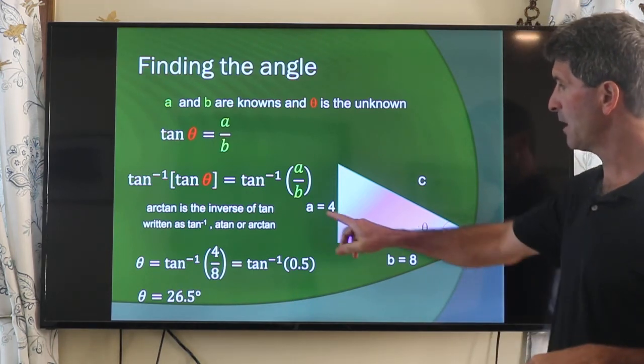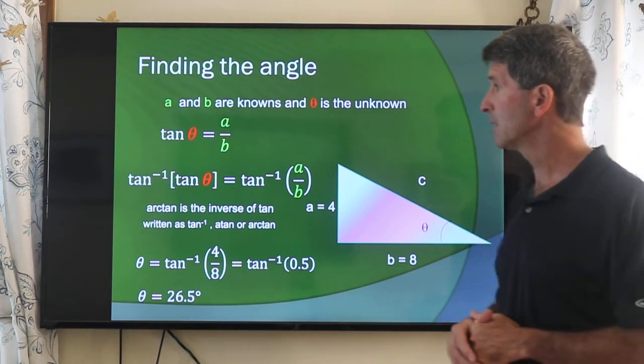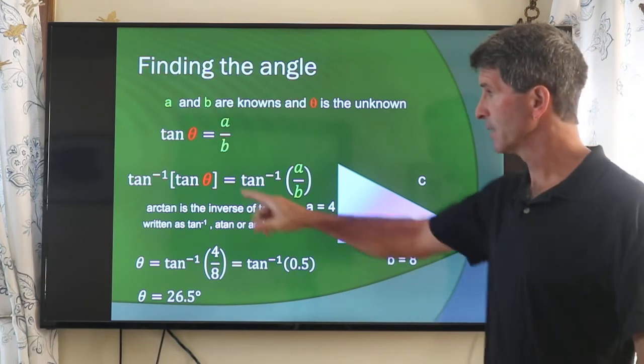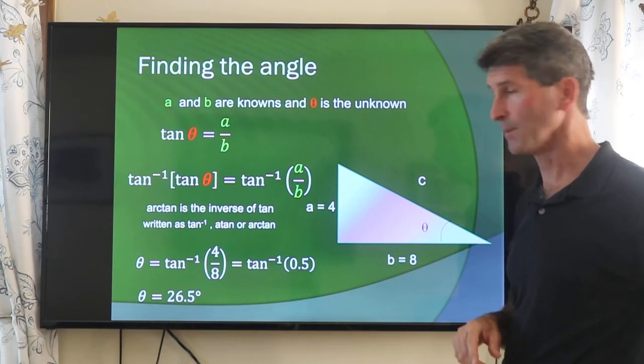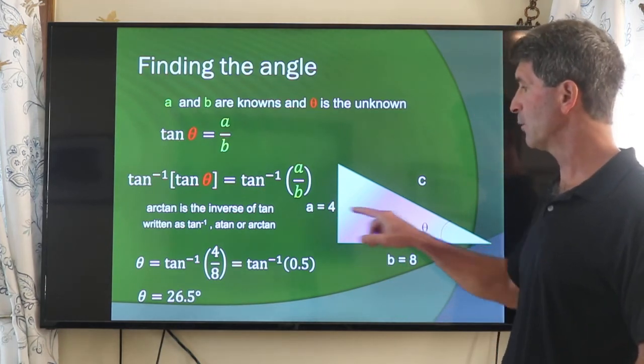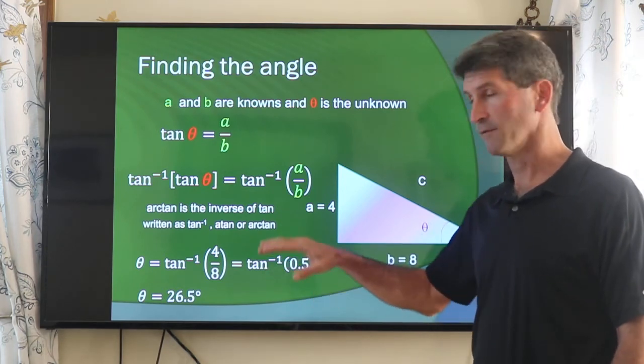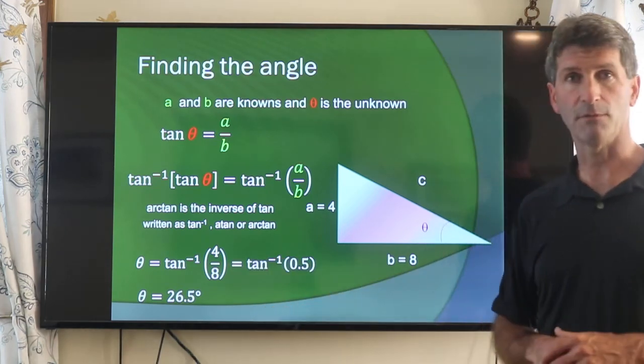Let's say here we know a and we know b. Here we're going to use the inverse tangent to find the angle by applying it right here. And that makes θ equal to the inverse tangent of a over b. So a over b, 4 divided by 8 is 1 half. The inverse tangent of 1 half, if I have my calculator set to degrees, becomes 26.5 degrees.